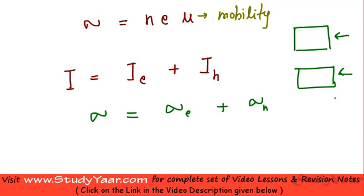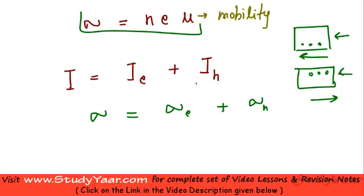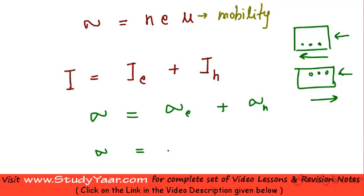Since there is current in both the valence band and the conduction band, the net conductivity accounts for both free electrons and holes. Using this formula, the net conductivity is n times e times mu for electrons, where n is the number of free electrons and e is the charge.